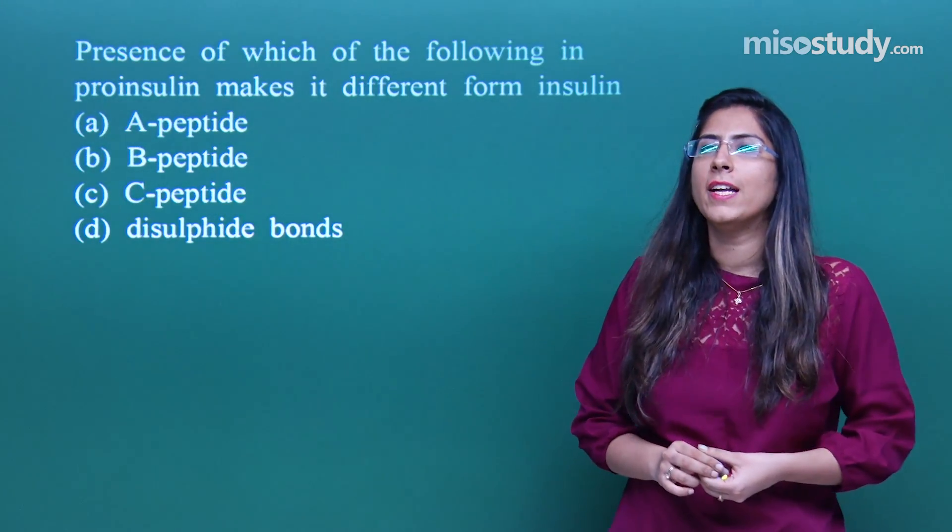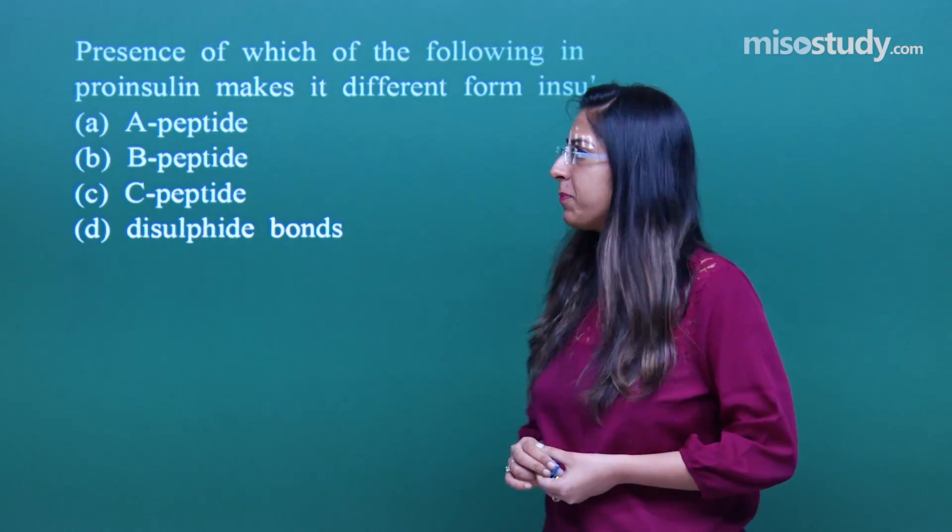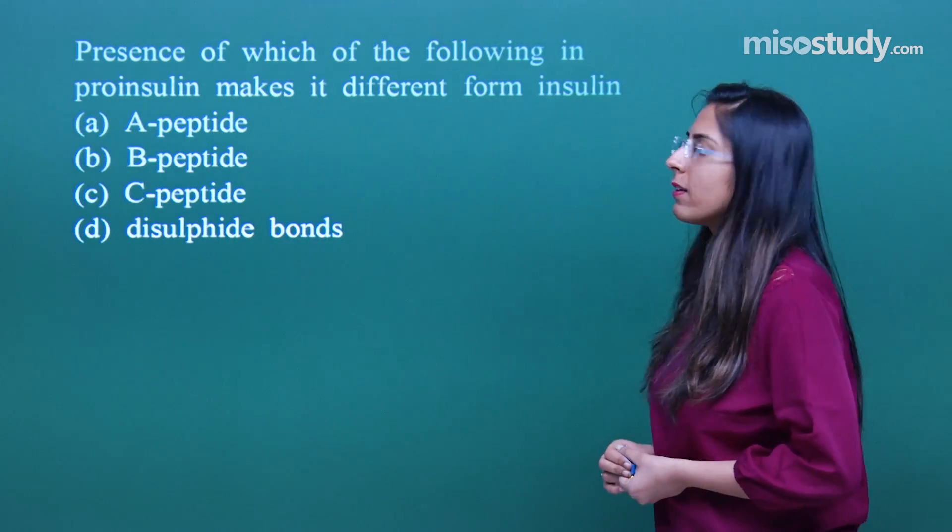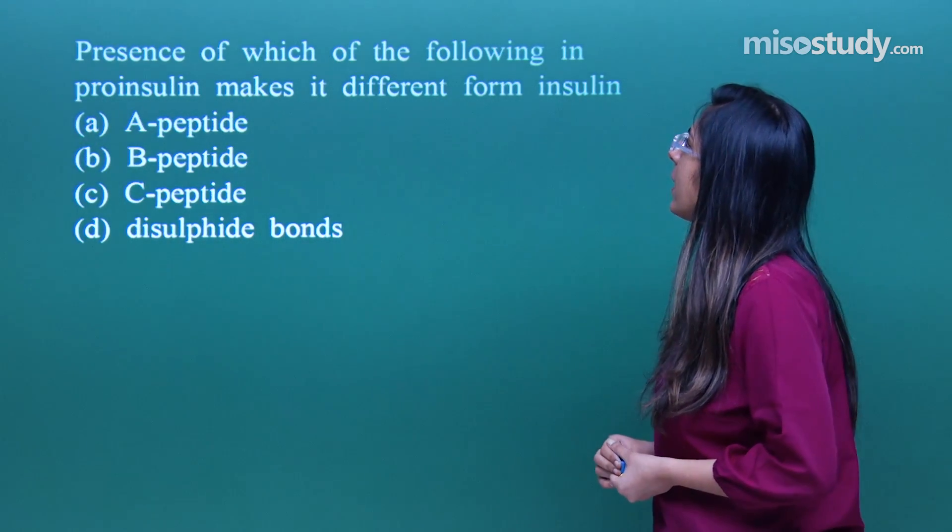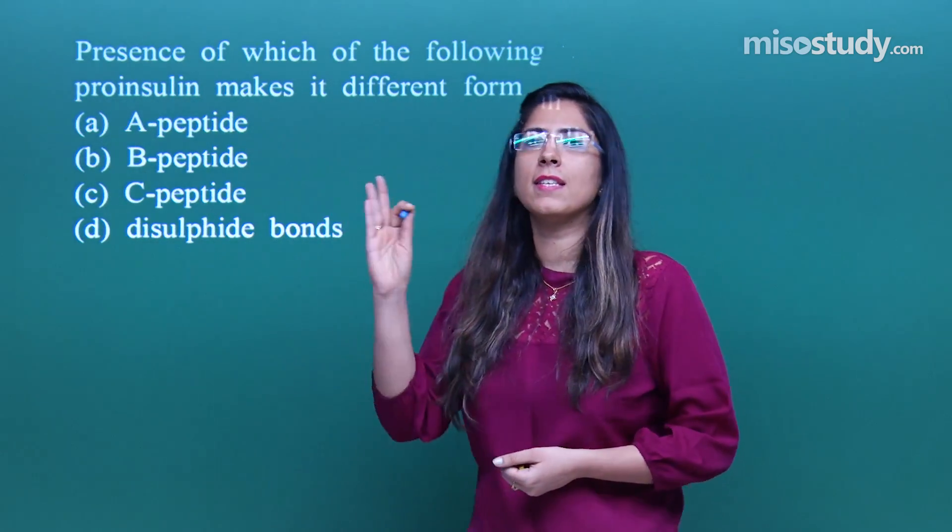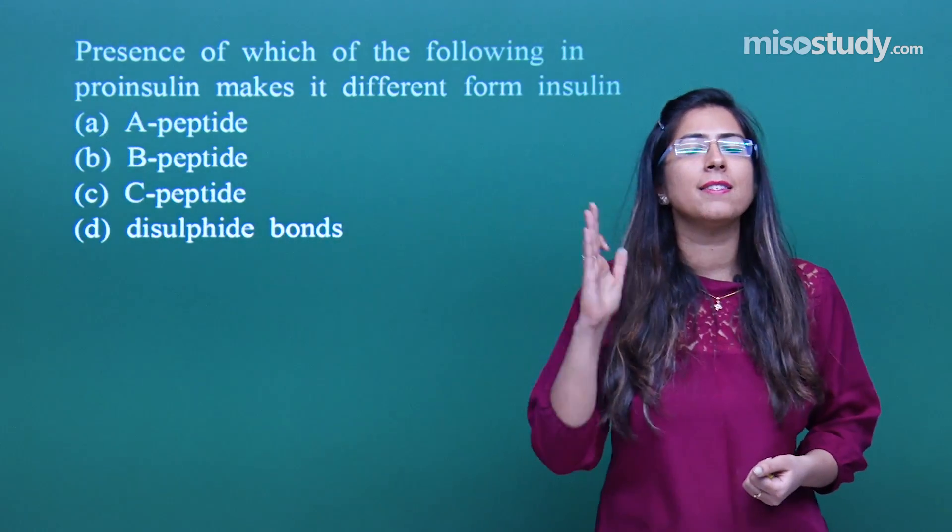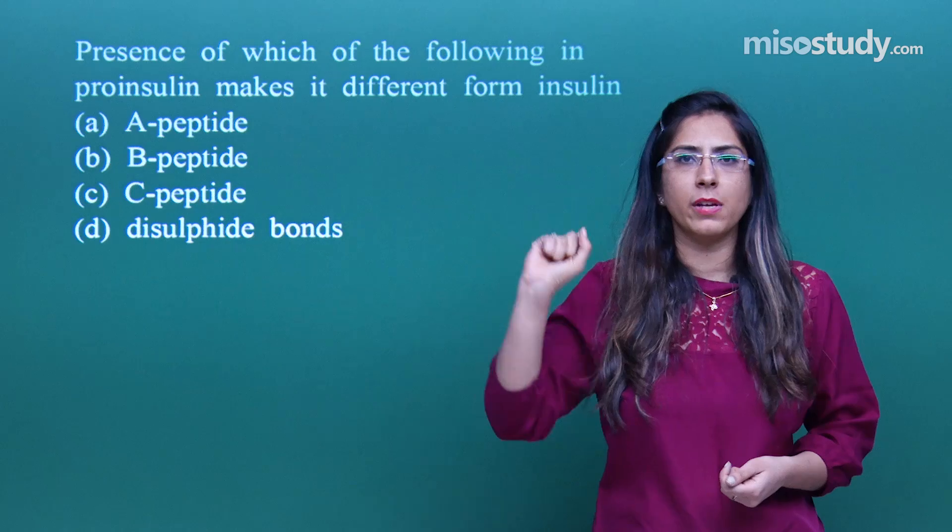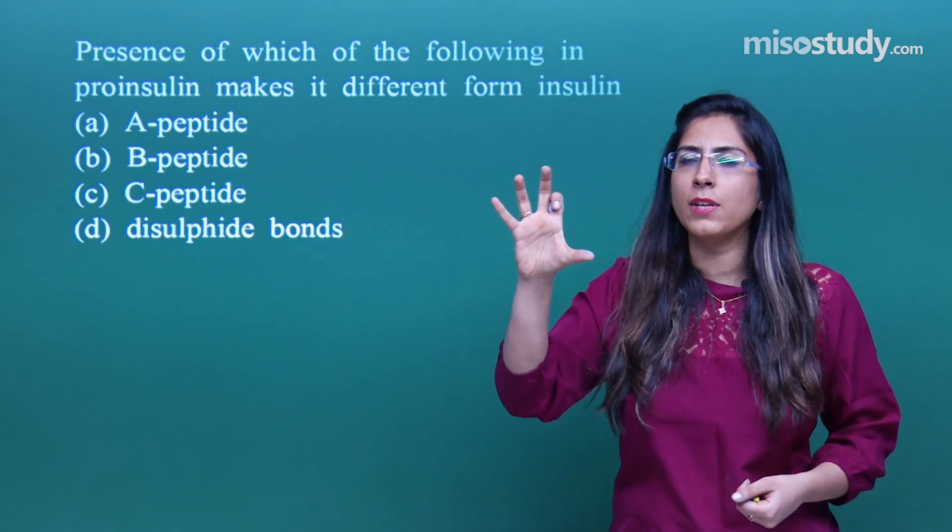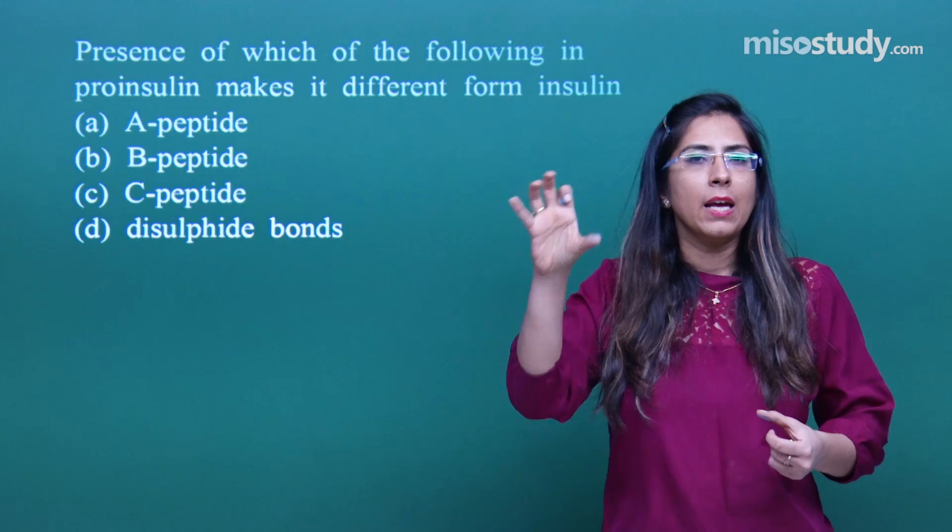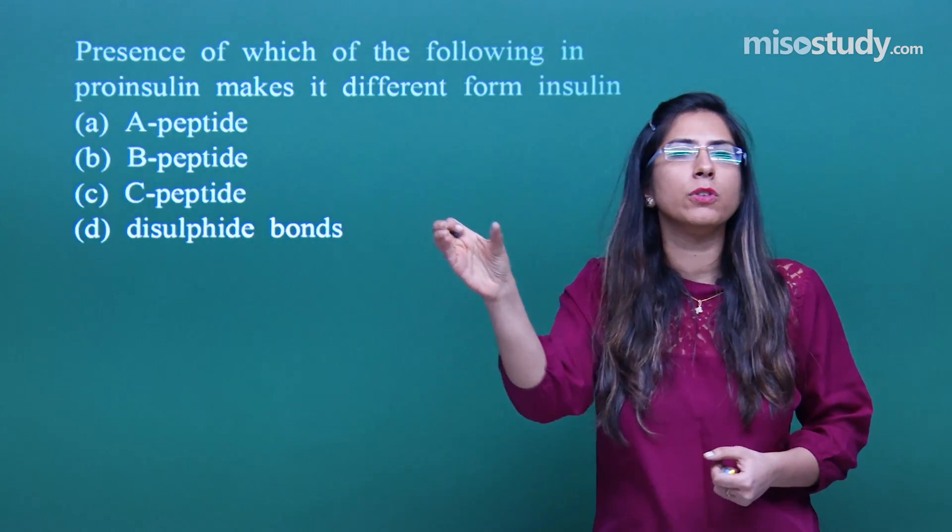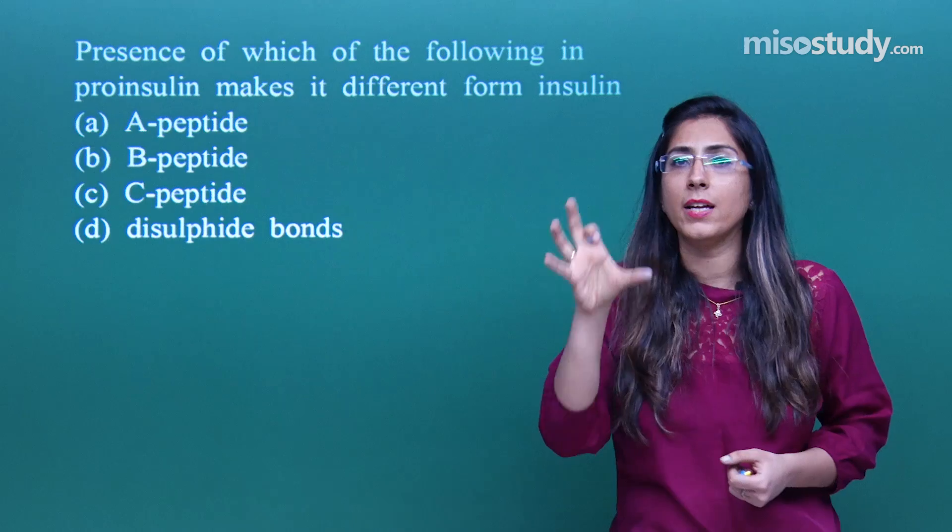Now let us discuss a question related to recombinant insulin. The question states that the presence of which of the following in pro-insulin makes it different from insulin. Whenever insulin is synthesized by the pancreas, it is synthesized in the form of pro-insulin. Now listen to this very carefully. Pro-insulin is that insulin which is in inactive form. If this pro-word is written before any of the word, that means that is in their inactive form.